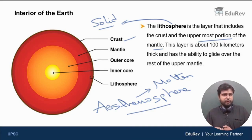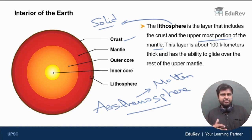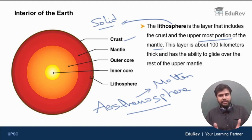Lithosphere is the first 100 kilometers of the earth starting from the surface, and lithosphere is solid. Beneath the lithosphere, you have a layer of molten material which is called asthenosphere.